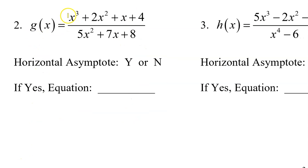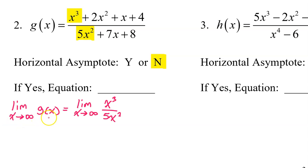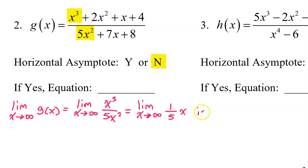In number 2, we see that the degree of the numerator is greater than that of the denominator. In a previous video, we learned that that means there is no horizontal asymptote. That's because the right end behavior will equal the limit as x approaches infinity of x to the third power over 5x squared. But this simplifies to one-fifth x, and as x approaches infinity, this limit is infinity. So there is no horizontal asymptote. There is a slant asymptote, which would be y equals one-fifth x, but they didn't ask about that.